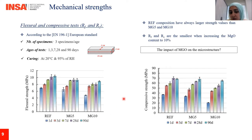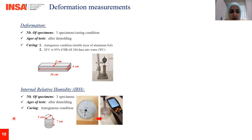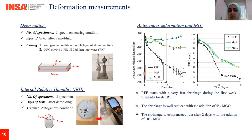Regarding the impact of MgO on the microstructure, we performed deformation measurements under two types of curing conditions: the first is autogenous condition, and the second in a humid chamber up to 28 days then into water. In parallel, we measured internal relative humidity also in autogenous condition. You can directly notice that the reference shows very fast shrinkage during the first week, as confirmed by its internal relative humidity. However, this shrinkage is well reduced when using 5% of MgO, and it is compensated after just two days when using 10% of MgO.